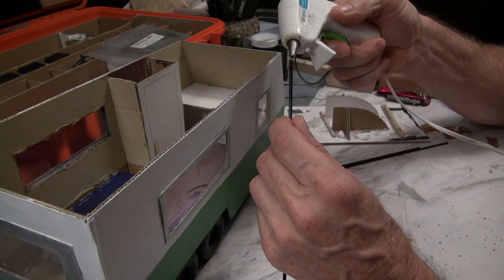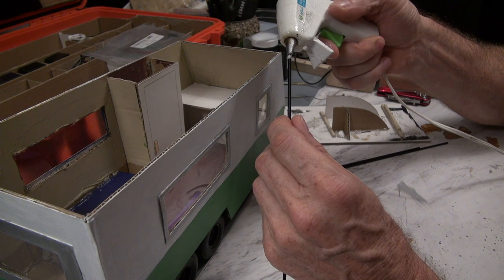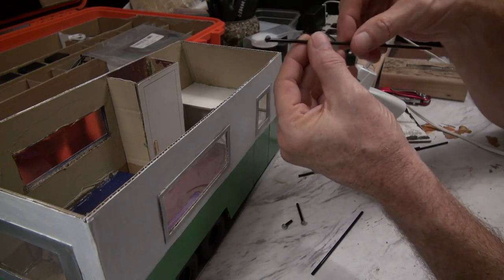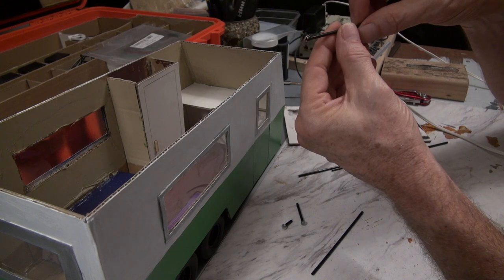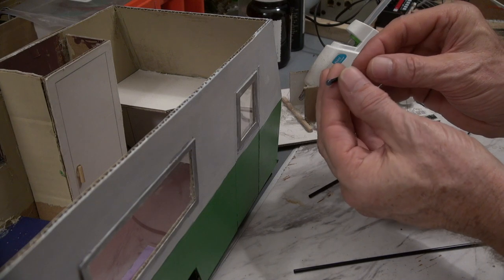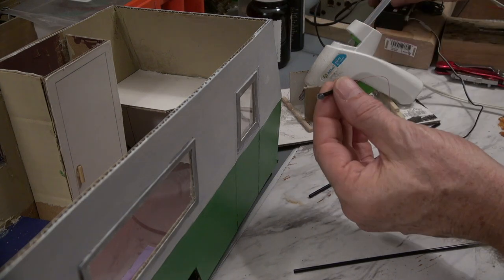Here I have some cocktail straws. They're really narrow. You can get a box of a thousand off of Amazon for pretty cheap. I don't know that I'm going to use a thousand, but anyway.